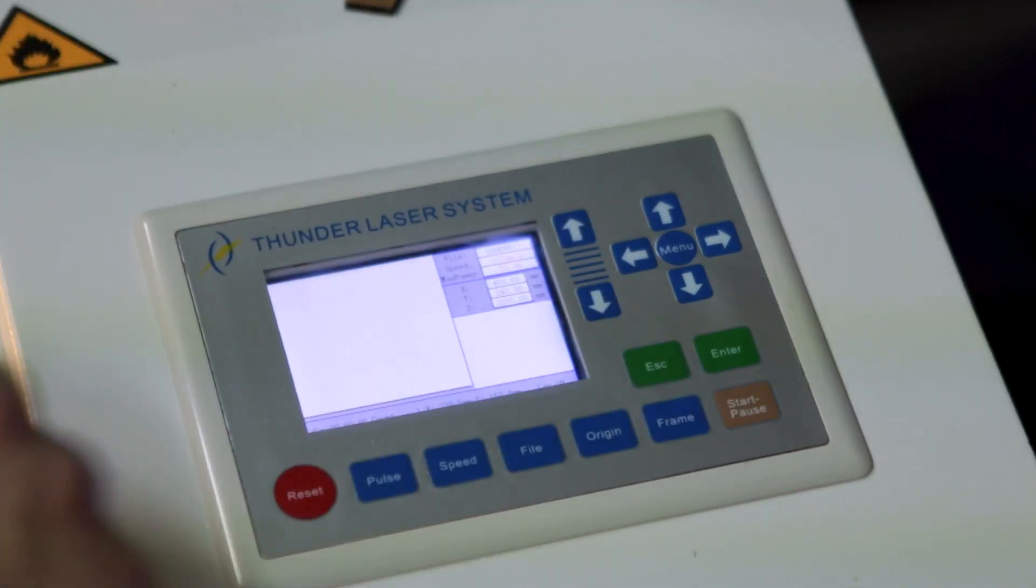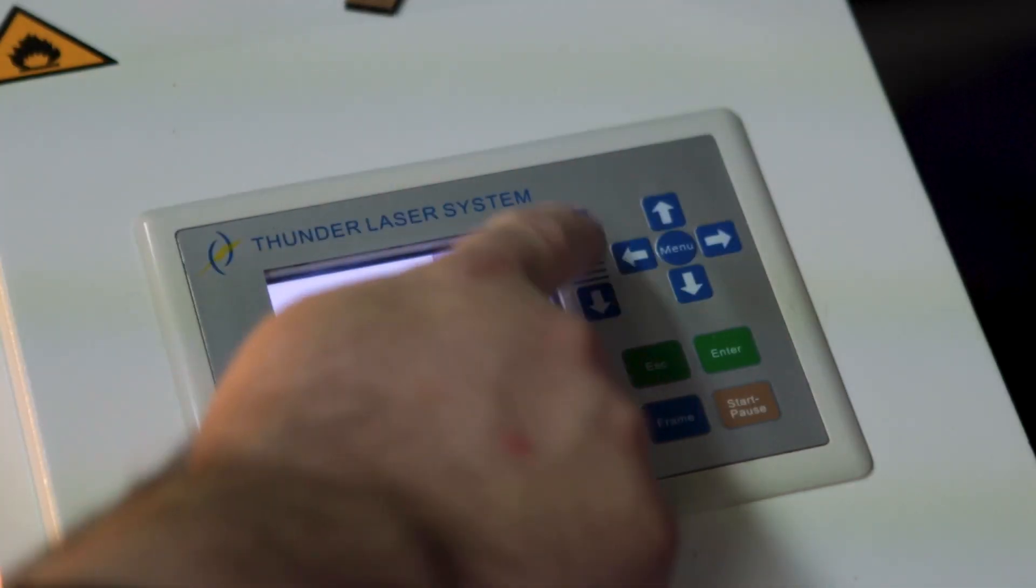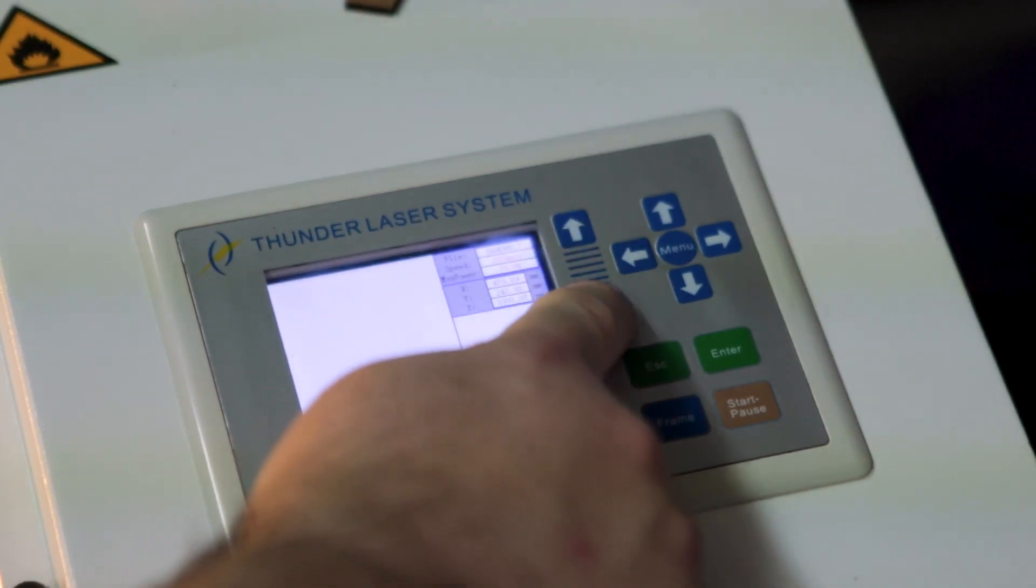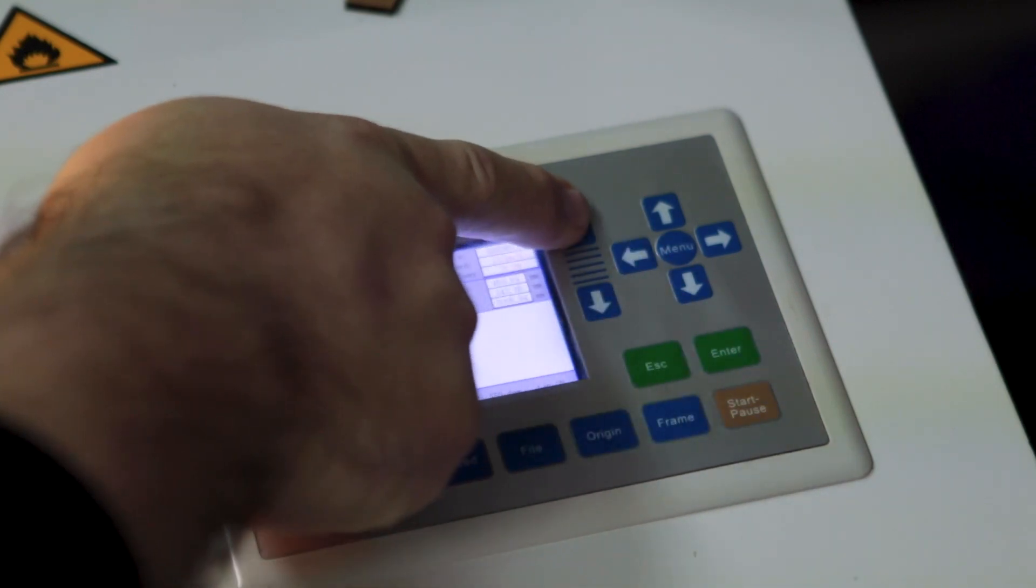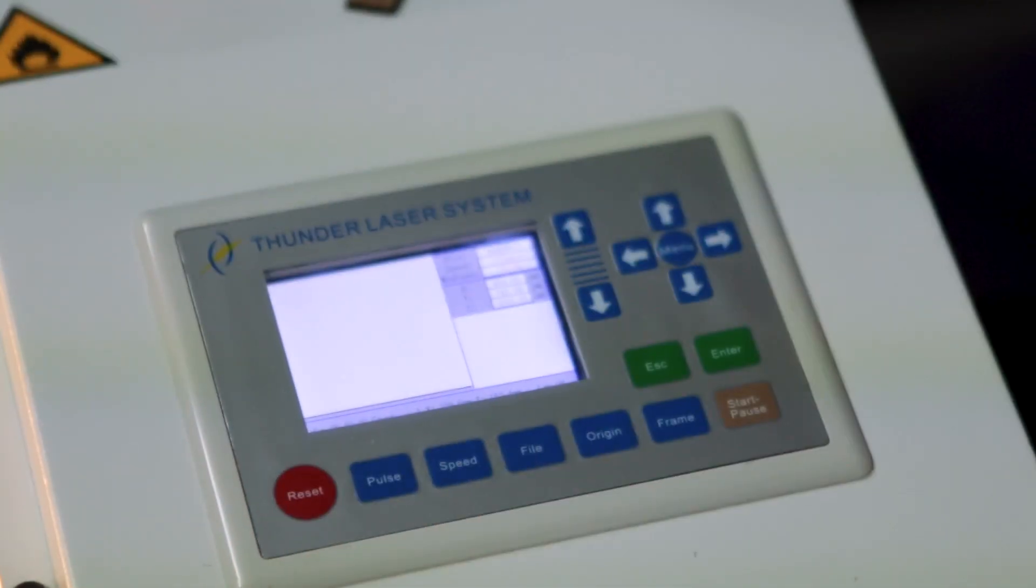First things first, let's make sure that you do know how to raise and lower your bed. The up and down arrow keys is how you do that. So if you want to lower your bed, just press the down arrow. And of course, just press the up arrow if you want to lift your bed up.